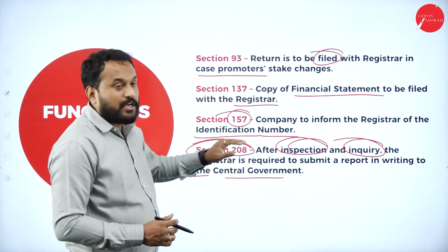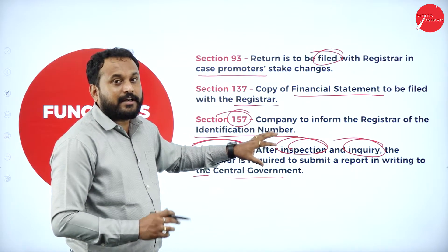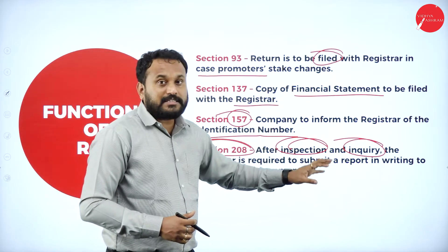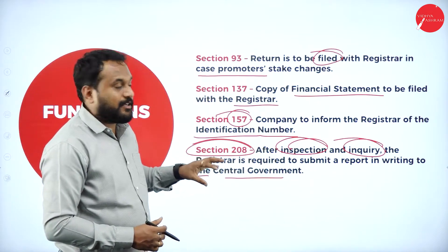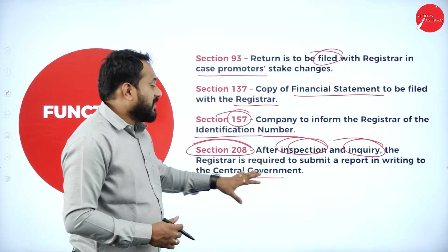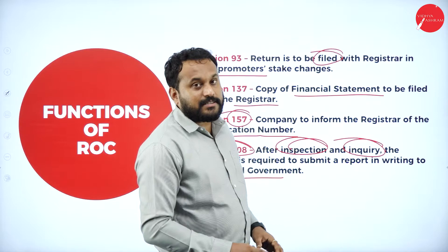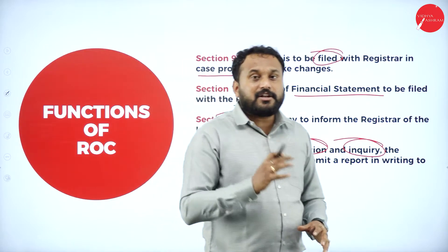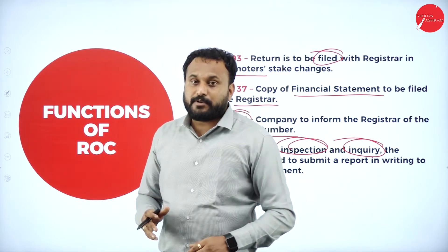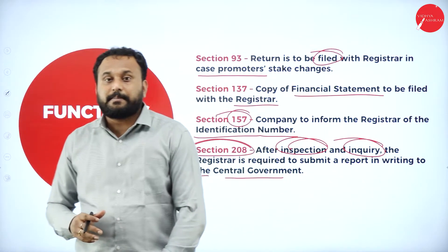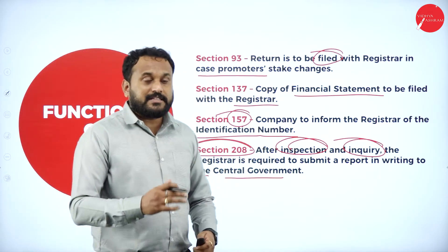Whenever a company is registered under a state government or union territory, the Registrar must give the central government a complete summary of all companies, along with the inspection records or inquiry records submitted to them. The Registrar of Companies is a government employee — not a private employee — and receives remuneration from the central government itself.